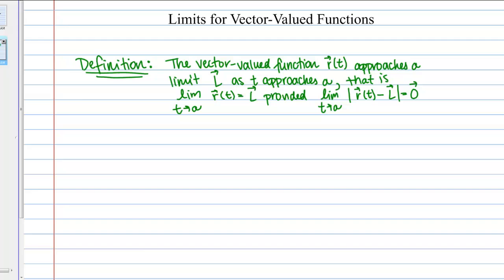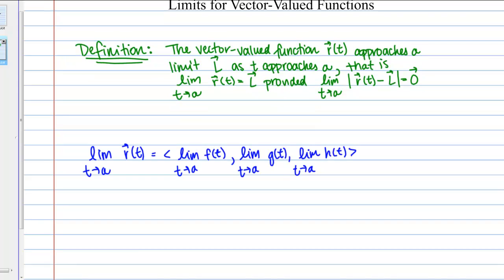Next, let's talk about how practically we take the limit of a vector-valued function. Here I've written the following fact: the limit as T goes to A of the vector function R(T) equals the vector (limit as T goes to A of F(T), limit as T goes to A of G(T), limit as T goes to A of H(T)).